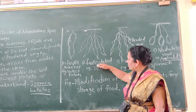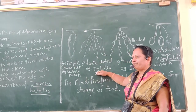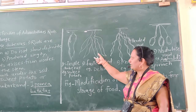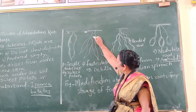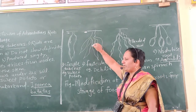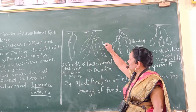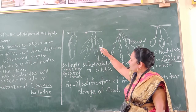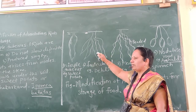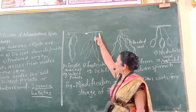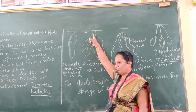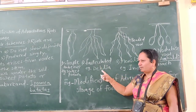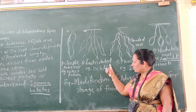Fasciculated roots are present in Dahlia. Dahlia is irregular in shape. So many small irregular roots are developed from the base of the root. That is called as fasciculated roots.